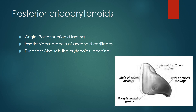The posterior cricoarytenoids originate from the posterior cricoid lamina and insert on the vocal process of the arytenoid cartilages. To clarify the anatomy: the anterior part of the cricoid is the arch, while the posterior part is the lamina. The posterior cricoarytenoids function as abductors of the arytenoids, opening the rima glottidis — the gap between the vocal cords.